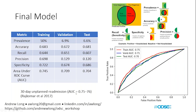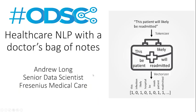Through this workshop, we're going to create a final model that achieves an area under the curve of 0.7 to predict hospital 30-day readmission — pretty good performance for a very basic Bag of Words model built in a 90-minute window. For comparison, state-of-the-art 30-day readmission models using lots of data have an AUC of 0.75, so we're able to get a strong baseline that performs very similarly to state-of-the-art. I hope to see you at ODSC West for the workshop titled Healthcare NLP with a Doctor's Bag of Notes. Thank you.